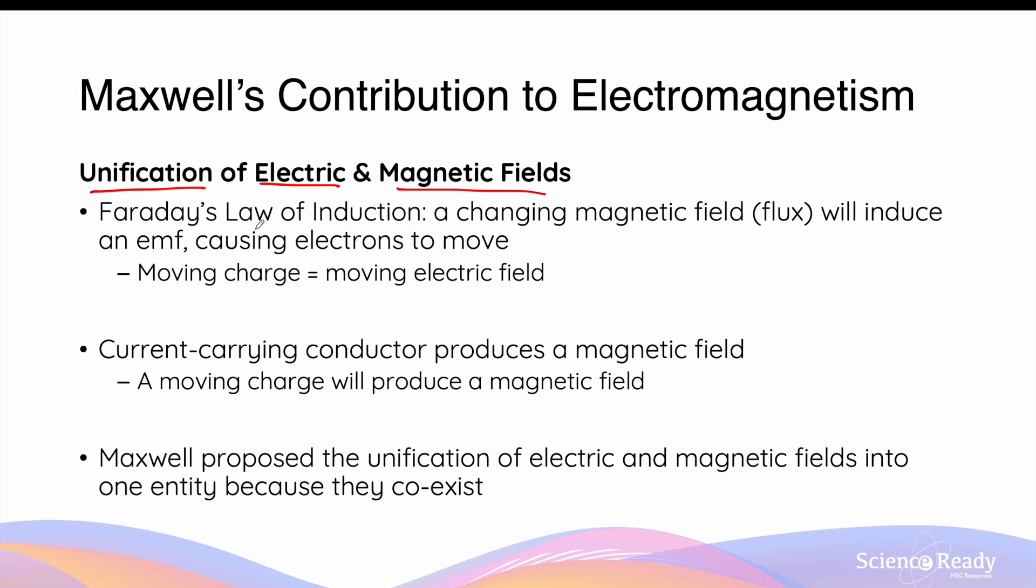Recall Faraday's law of induction. A changing magnetic field or magnetic flux will induce an emf in a conductor and this emf will cause electrons to flow, which is what we call current. Since electrons are negative charges, when there's an emf there will also be a moving electric field because charges are accompanied by electric fields.